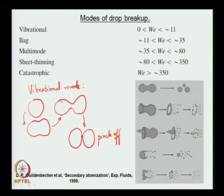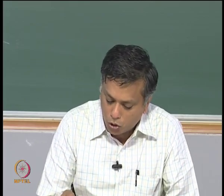Pictorially, in this particular instance there is very little preferential direction of the air motion. In all these cases the drop is introduced into an air stream of some velocity u, which gives rise to the Weber number. Initially the drop is at rest; the relative velocity between the drop and the air causes vibrational behavior when the Weber number is very small.